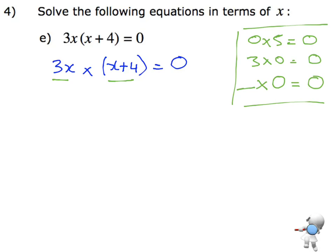So in order for that something to be equal to 0, one of those pieces, like we saw in our rule, one of those pieces must be 0. So either the 3x is equal to 0, or the x plus 4 is equal to 0.